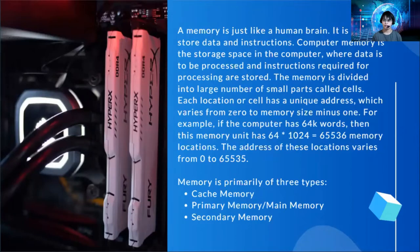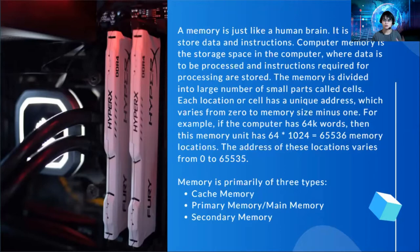The memory is divided into a large number of small parts called cells, just like a human brain. Each location or cell has a unique address which varies from 0 to memory size minus 1. For example, if the computer has 64K words, then this memory unit has 2 raised to 4 multiplied by 1024, equal to around 65,536 memory locations. The address of these locations varies from 0 to 65,535.